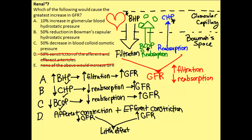In order to do that, we have to look at our average values for each of these different pressures — you will have to memorize these. The average value for the blood hydrostatic pressure is 45 millimeters of mercury, and the average value for the blood colloid osmotic pressure is 27 millimeters of mercury. It's told to us in the problem that in A it's a 10% change, in B it's a 50% change, and in C it's also a 50% change.